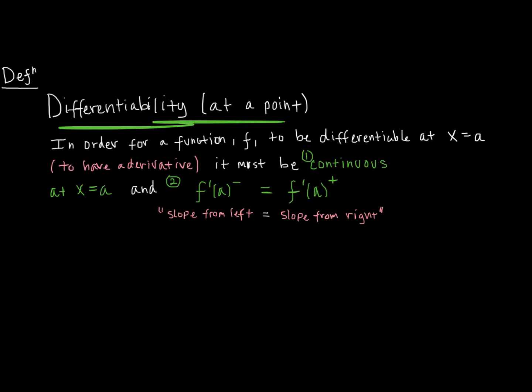You'll notice it's a slightly different notation — we've seen this with limits before. The derivative is just a limit; that's how we calculate it. What we're saying is that the left-hand derivative as you approach A and the right-hand derivative must be equal. We can write this out using the limit definition in a couple of different ways, depending on which definition you're most comfortable with.